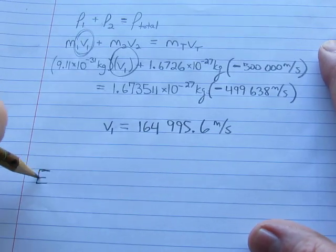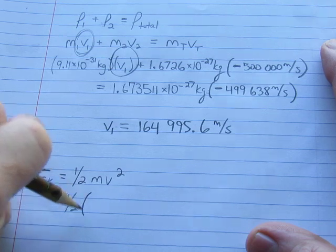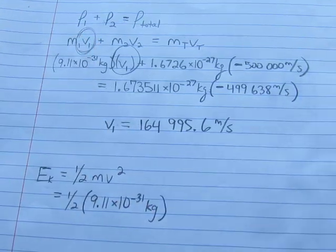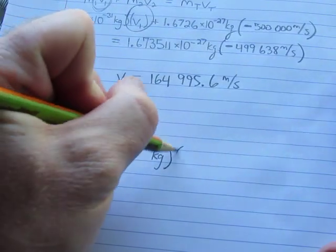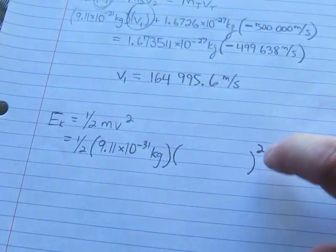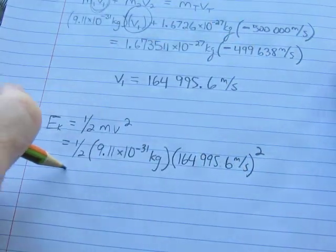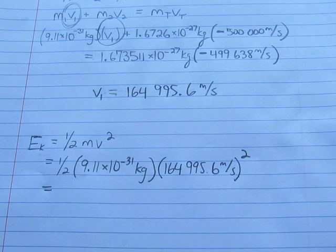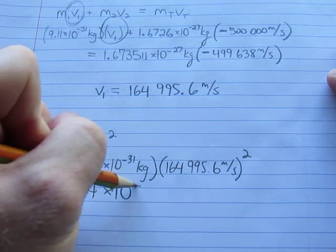Let's solve for the kinetic energy of this electron. Kinetic energy is one half mv squared, so one half times the mass again, 9.11 times 10 to the negative 31, times 164,995.6 meters per second squared. Despite that ridiculous speed, the particle is so small that this is going to be an extremely small energy. It comes out to 1.24 times 10 to the negative 20 joules.